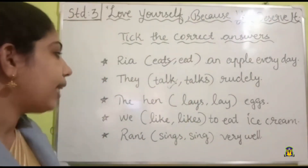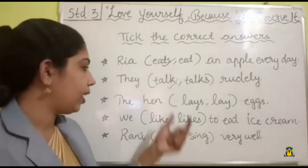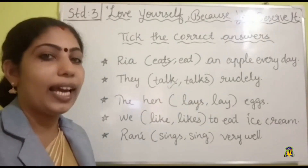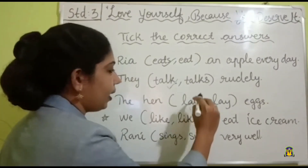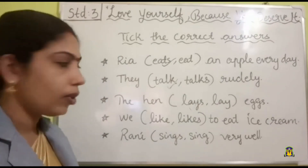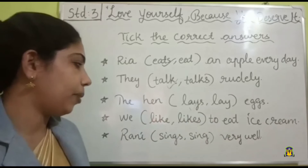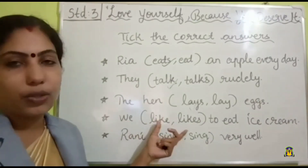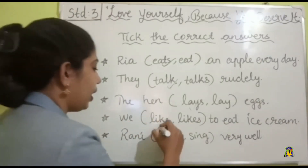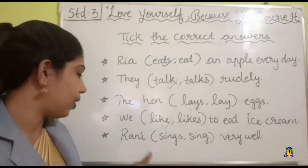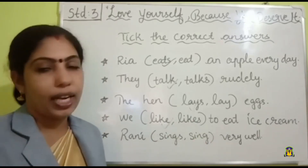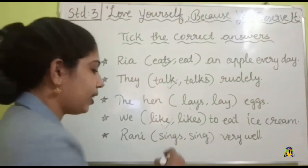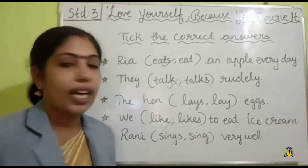Third question: 'The hen ___ eggs.' Options: lays / lay. 'The hen' is a singular subject, so we add S. Correct answer: 'The hen lays eggs.' Fourth question: 'We ___ to eat ice cream.' Options: like / likes. 'We' is a plural subject, so no S needed. 'We like to eat ice cream.' Last one: 'Rani ___ very well.' Rani is a singular subject, so we add S. Correct answer: 'Rani sings very well.'